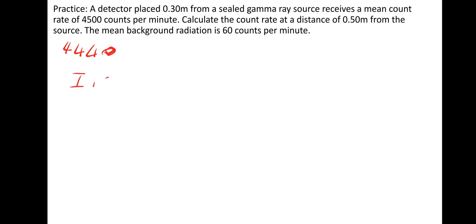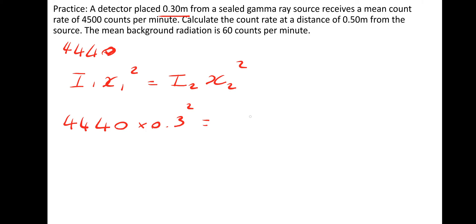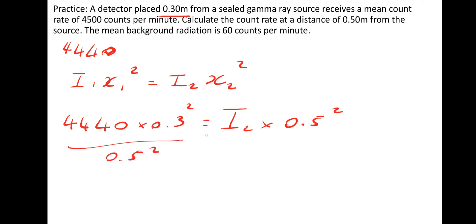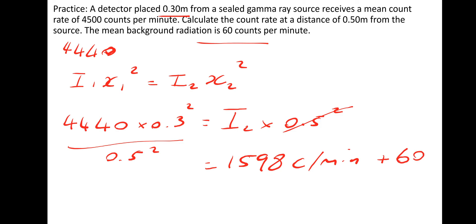Using I₁x₁² = I₂x₂²: 4,440 × (0.3)² = I₂ × (0.5)². So it's 4,440 × 0.3² divided by 0.5², which gives us 1,598 counts per minute. However, you have to add back on the mean background radiation — so we add the 60 counts — because this is what the actual count would be. The total count is therefore 1,658 counts per minute.